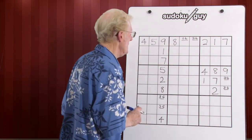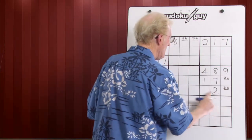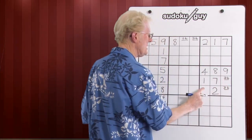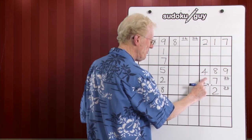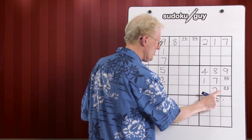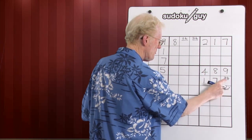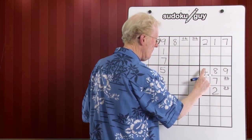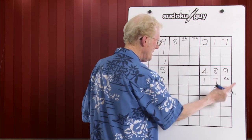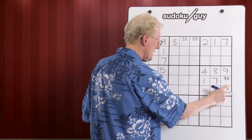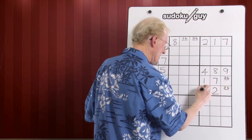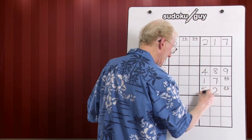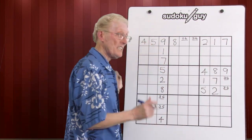Let's take this block now. We've got a three, six, three, six and an empty cell. Once again, we count through: one, two, three is spoken for, four, five is missing, six, seven, eight, nine. So this empty cell has to be a five. And that's how it works. The key is to look for that situation.